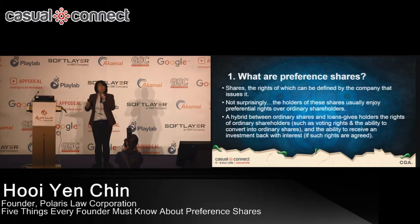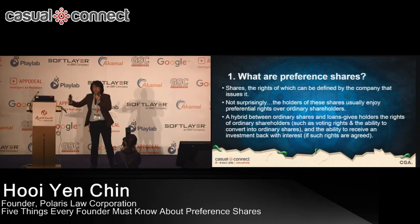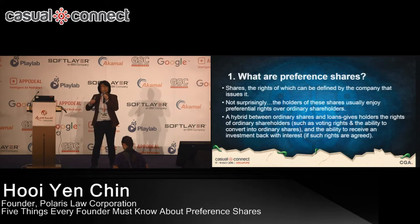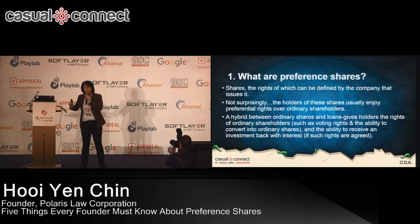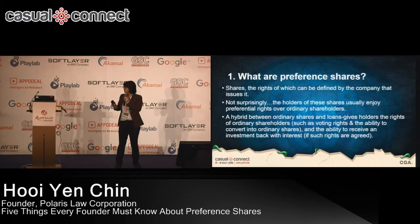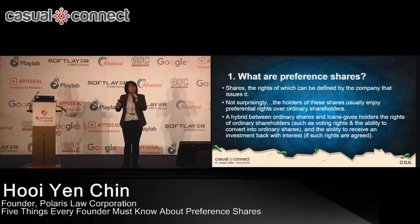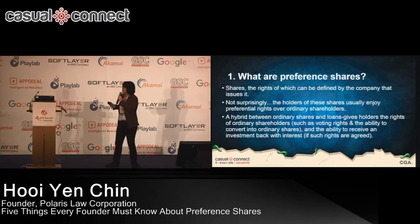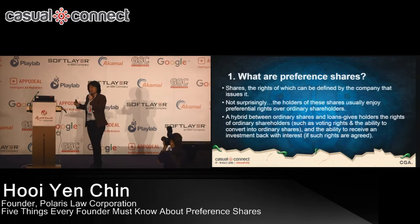The investor may tell you certain points are not negotiable because they have an obligation to their own investors — that's their commercial imperative. But legally, these rights are something that the company will give to these shares when they're issued. Preference shares are sometimes called a hybrid between ordinary shares and loans, because investors will ask not only for rights an ordinary shareholder has, but also for rights more commonly associated with loans — such as a preferential dividend.